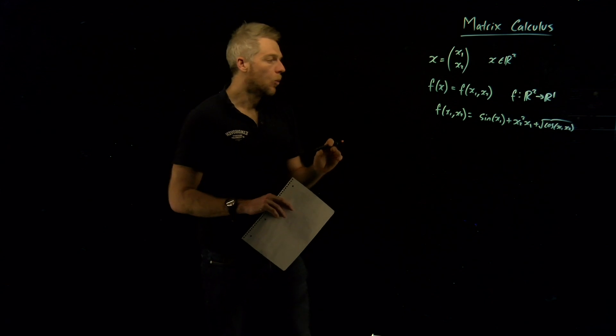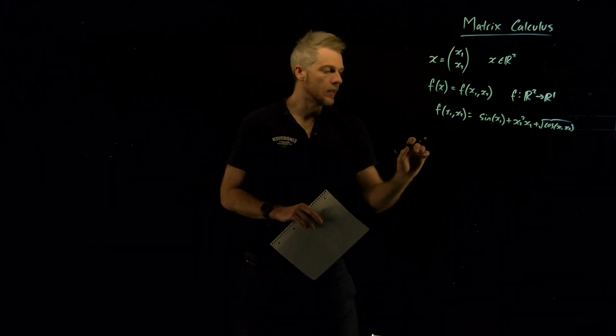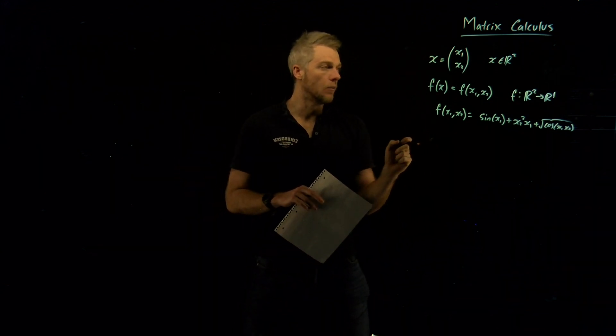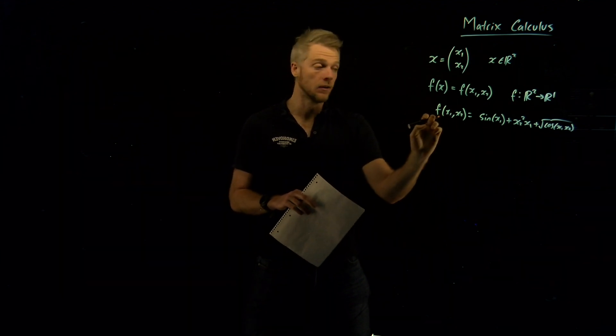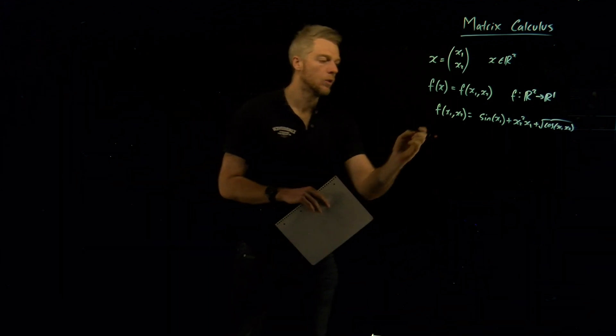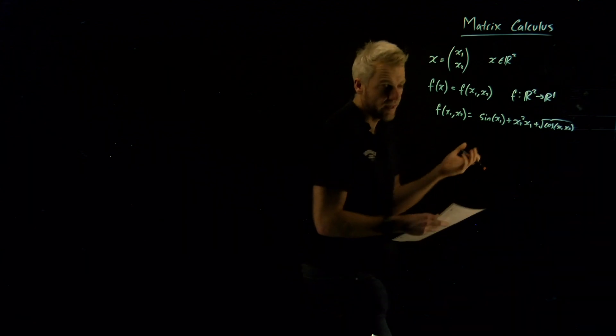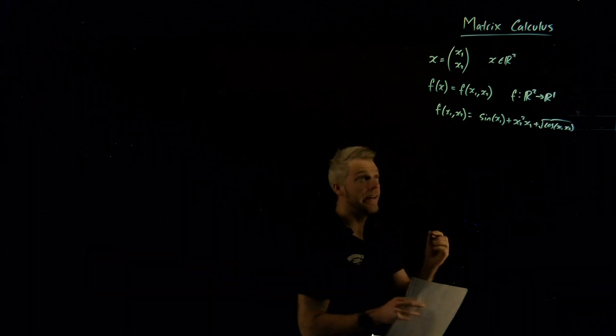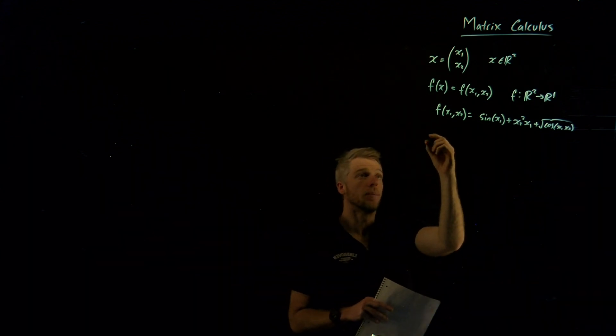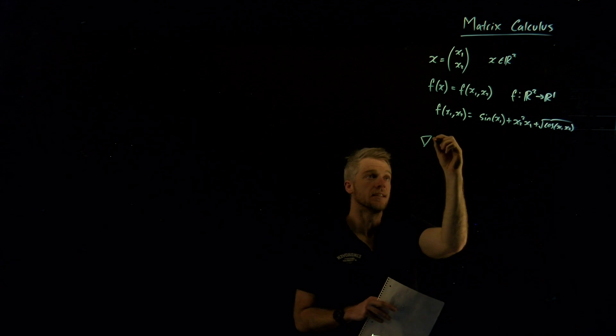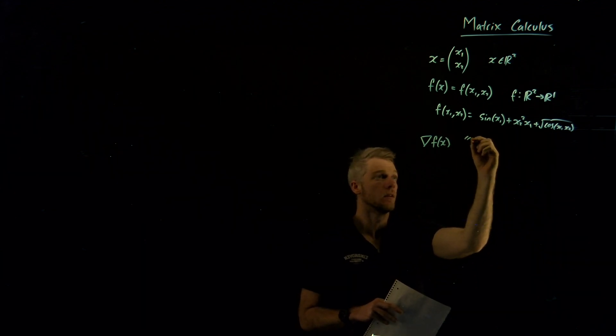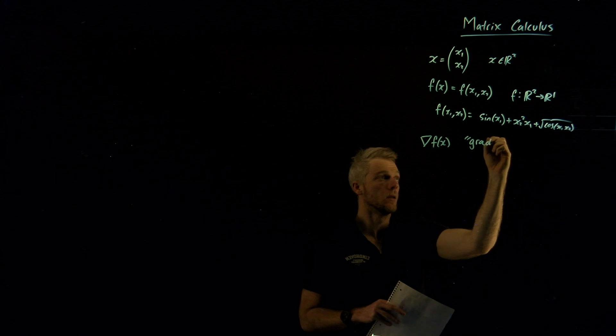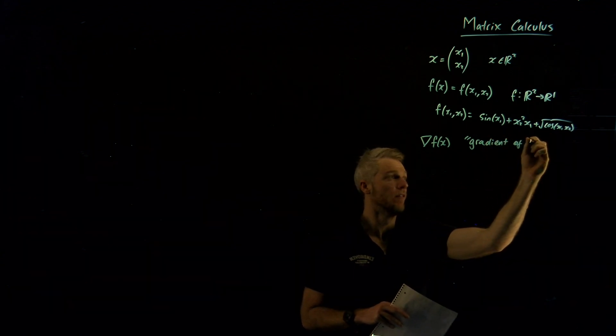Now why do I bring this up? It's because often in the case of optimization theory, we're interested in finding a minimum of some function, f. And to do that, we'll typically need information, or we can need information, about the gradient of f. So let me talk about what's called the gradient of f. This is known as the gradient of f.